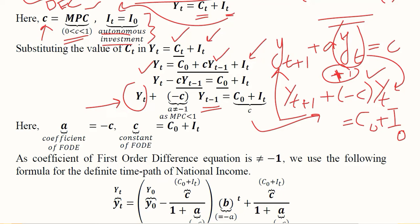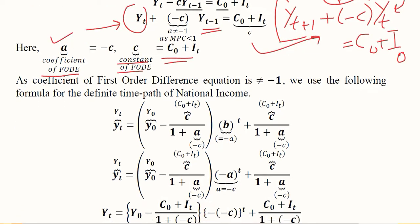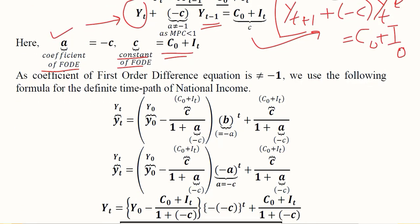The constant of the first-order difference equation here equals C0 + I0. We can see that c appears with a negative sign, and we know c is MPC, which is between 0 and 1. This means it is less than 1.